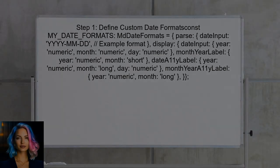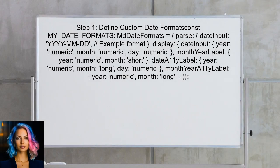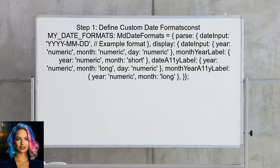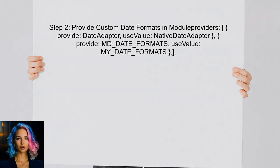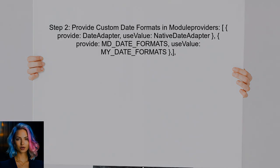To implement custom date formats for the date picker, the user should first define their own date formats. This can be done by creating a new constant that extends the default formats. Next, the user needs to ensure that they provide this custom date format in the providers array of their Angular module. This is crucial for the date picker to recognize the new formats.